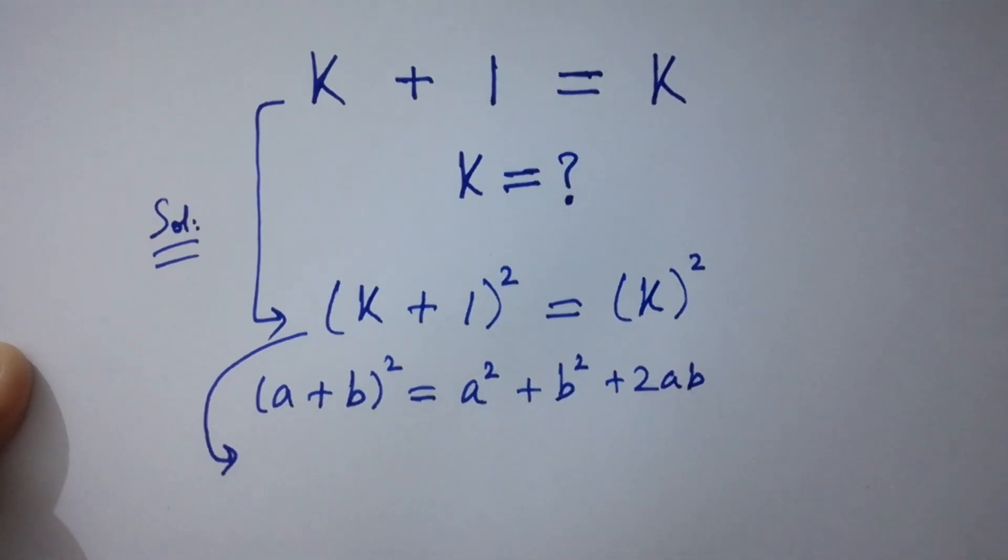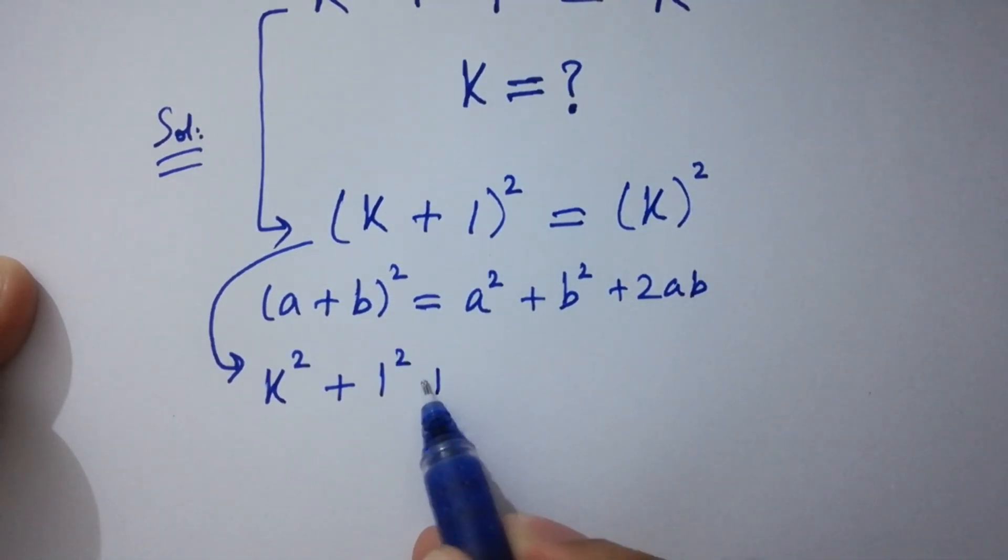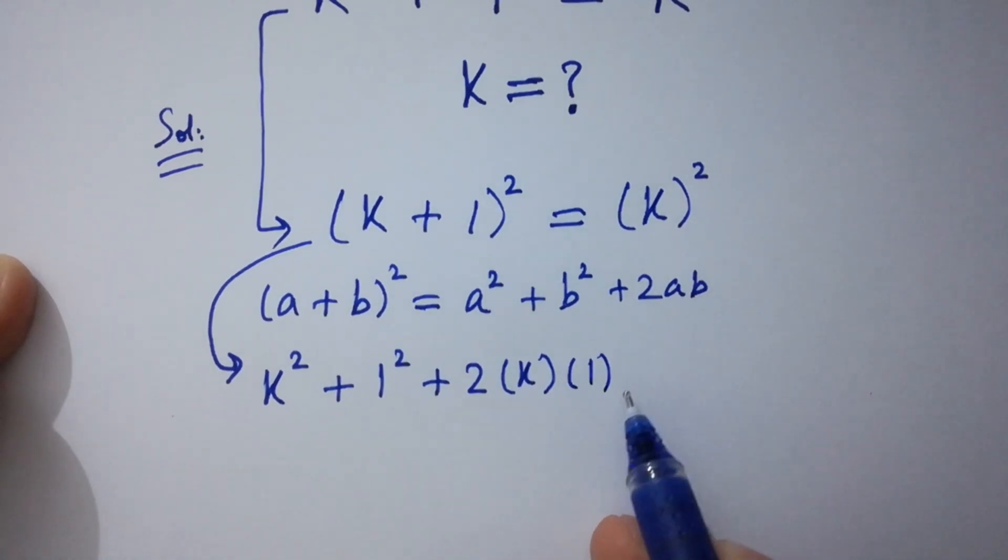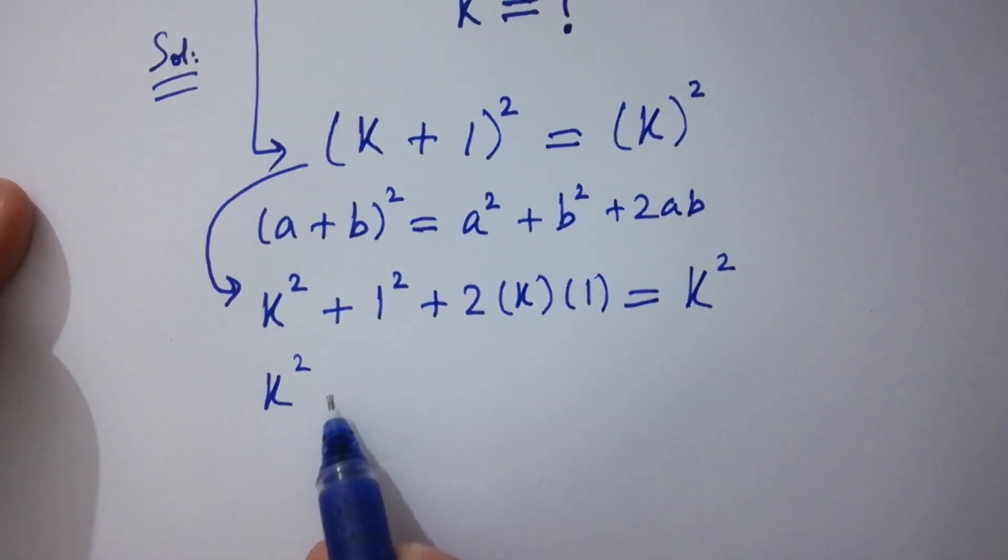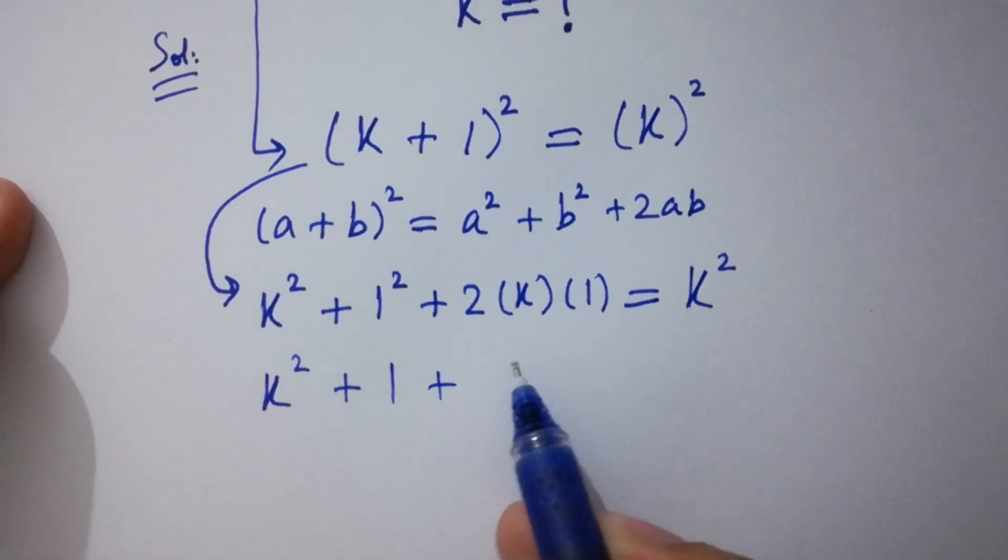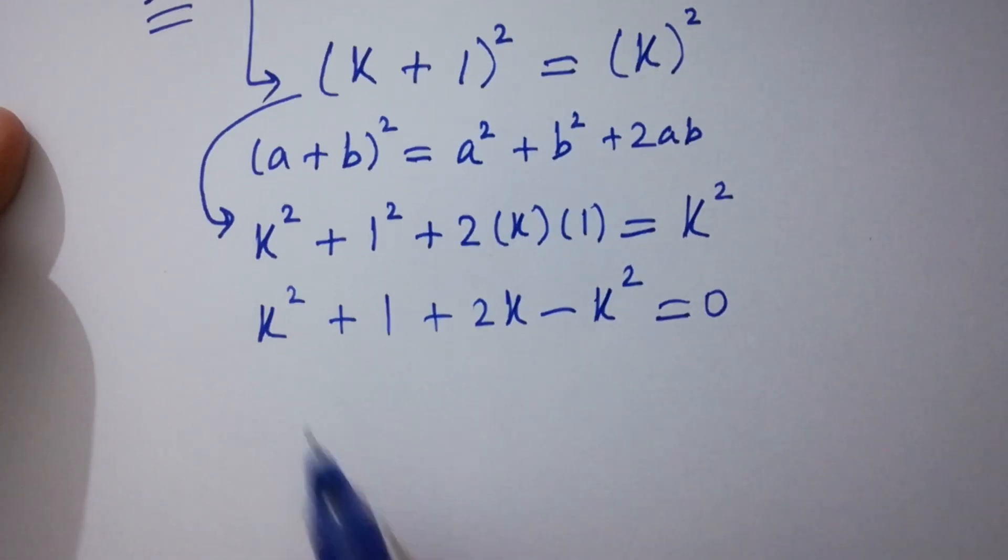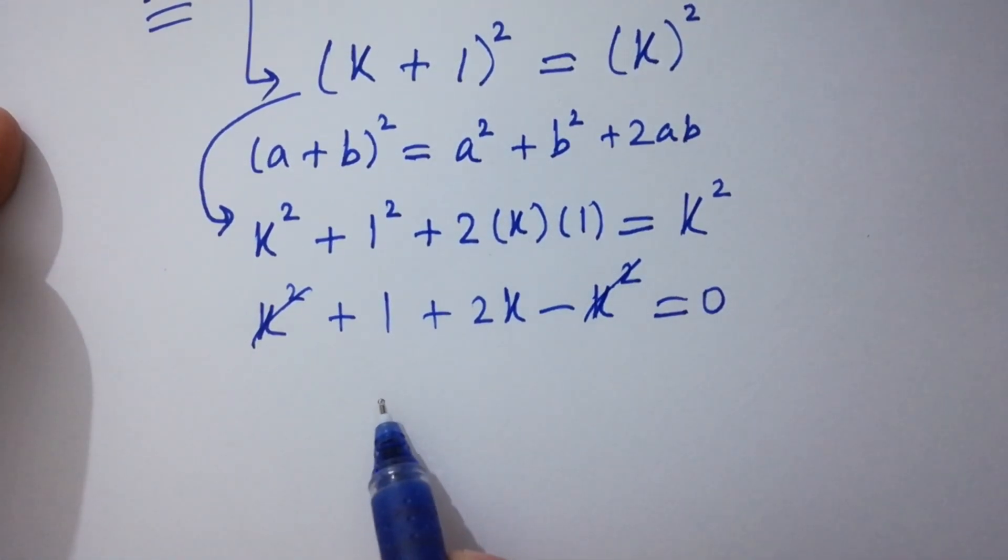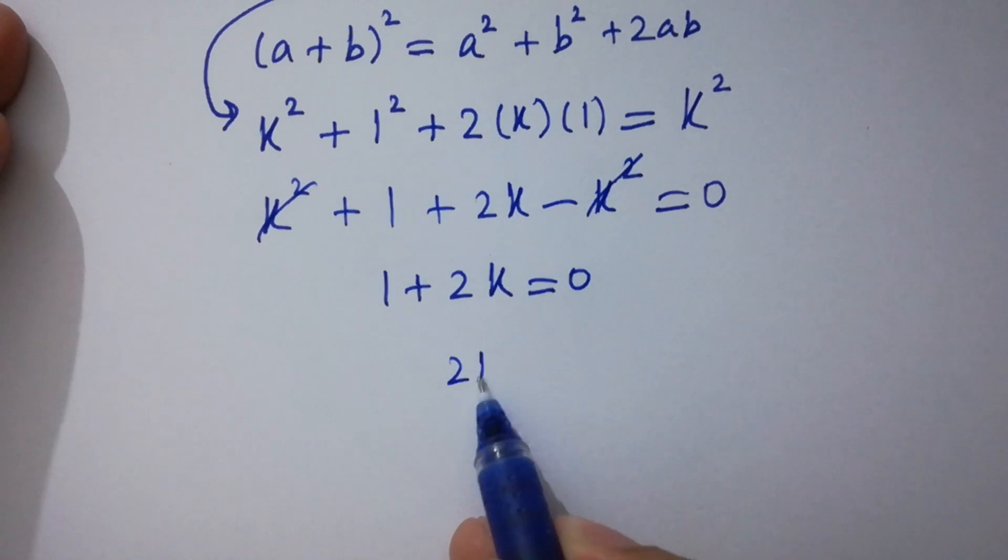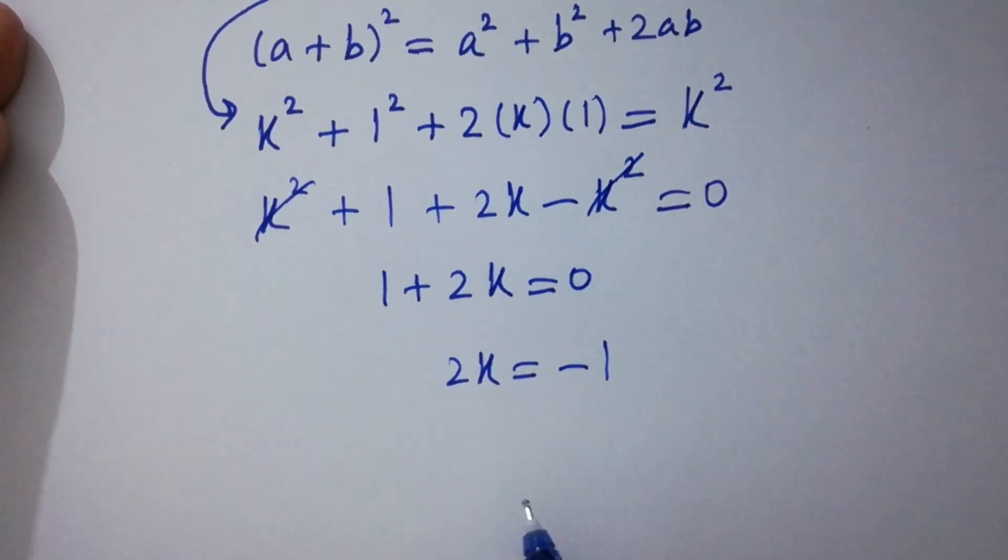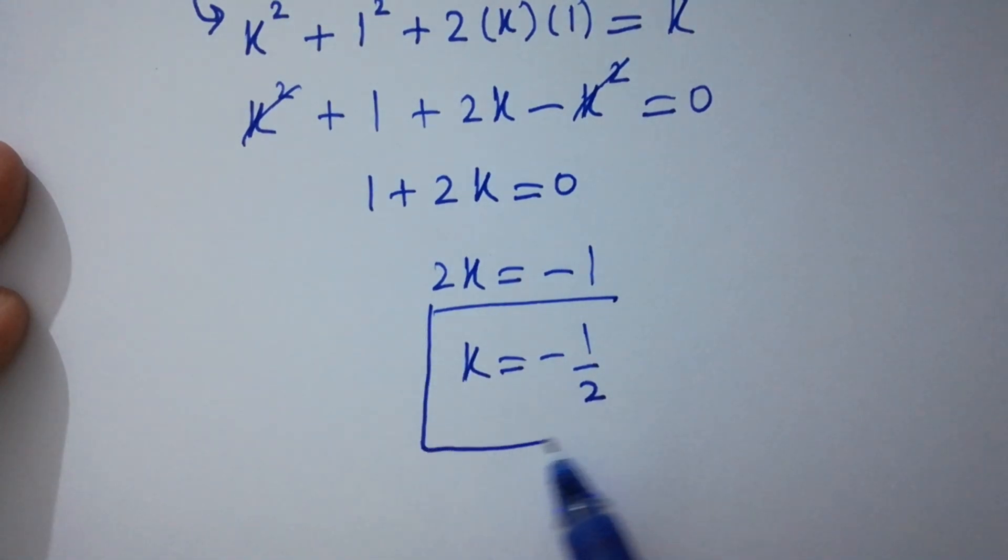Then we get k square plus 1 square plus 2k times 1 equal to k square. k square plus 1 square is 1 plus 2k minus k square equal to 0. k square and k square cancels. We get 1 plus 2k equal to 0. 2k equal to minus 1. We get k equal to minus 1 over 2 which is the value of k.